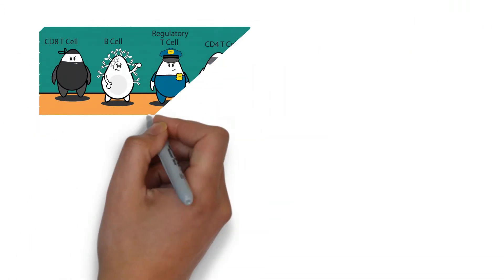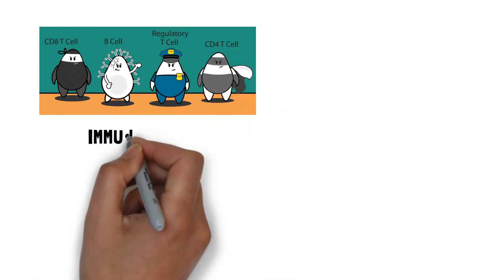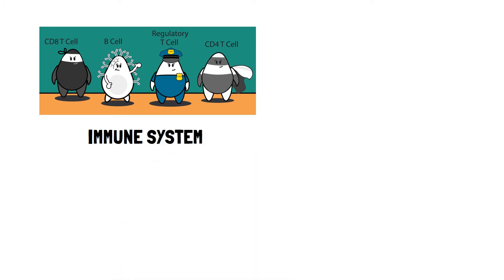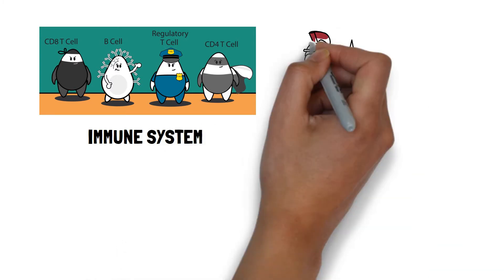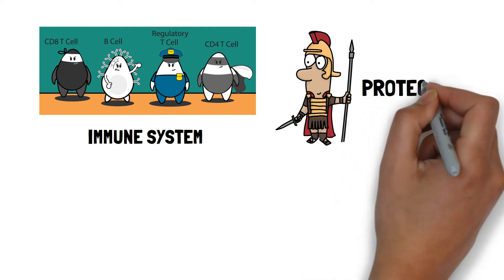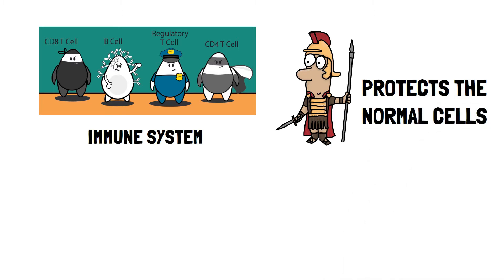The human immune system is a very advanced and full proof system where multiple cells and chemicals are used to prevent the body from getting infected. There is division of labor in the immune system where the immune cells have their roles defined and they are interdependent on each other for proper functioning.